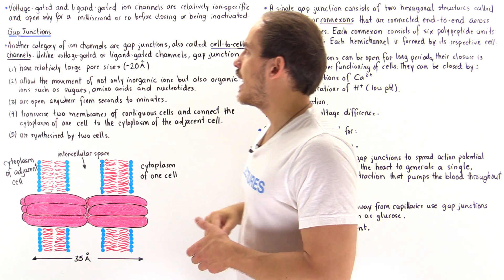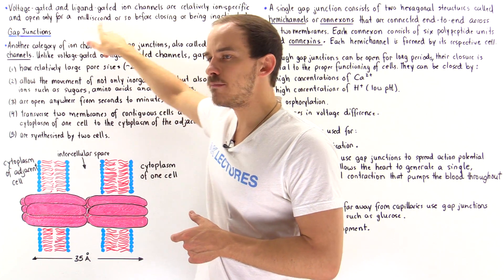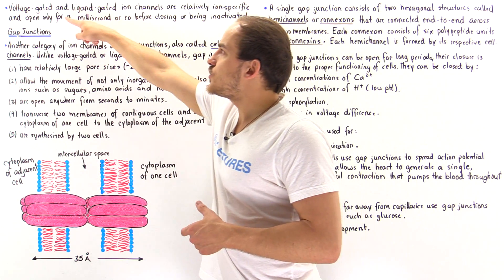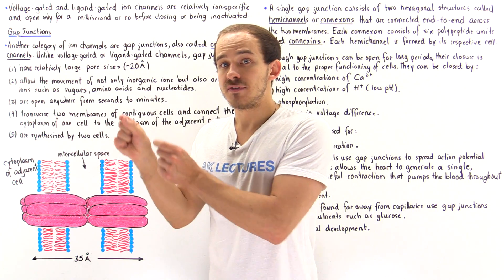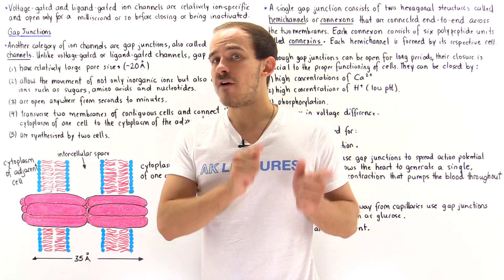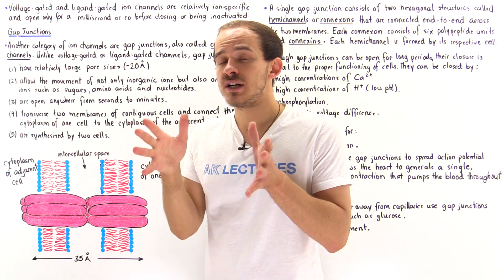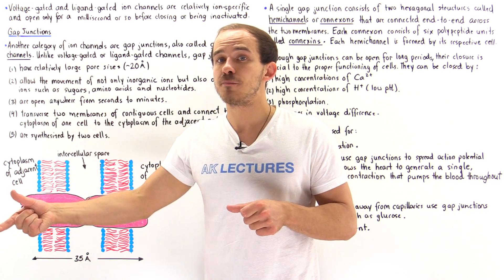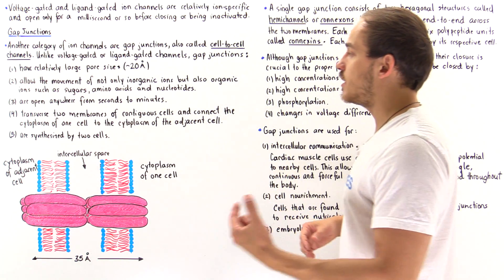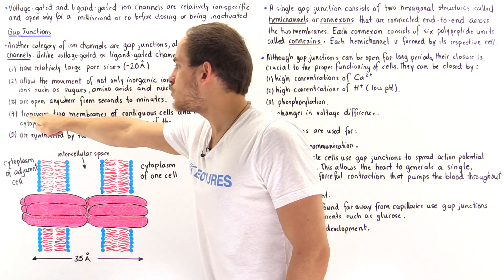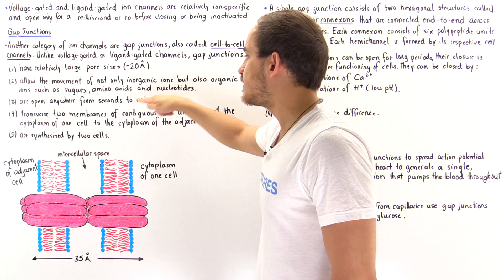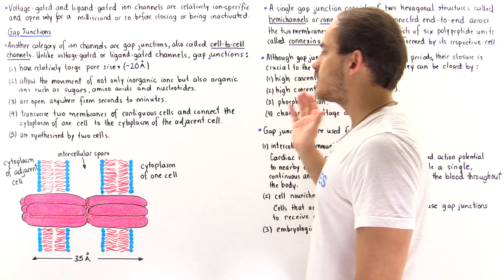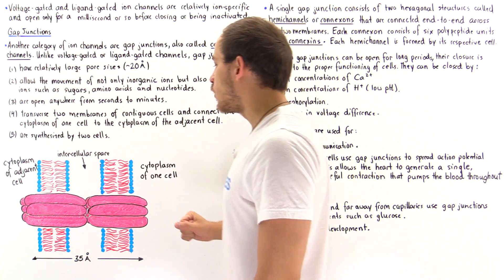Unlike voltage-gated and ligand-gated ion channels, which are only open for about a millisecond before being closed or inactivated, gap junctions can be open anywhere from seconds to minutes. Additionally, voltage-gated and ligand-gated channels connect the cytoplasm of a cell to the outside extracellular environment, but gap junctions actually connect two adjacent cells — they traverse the membranes of two contiguous cells and connect the cytoplasm of one cell to the cytoplasm of the adjacent cell.